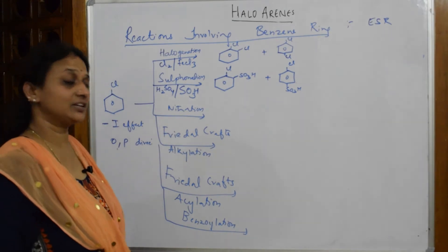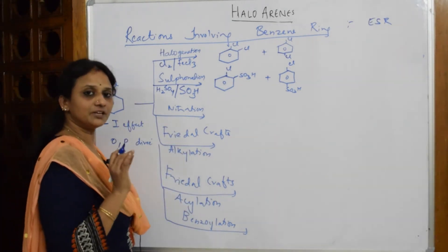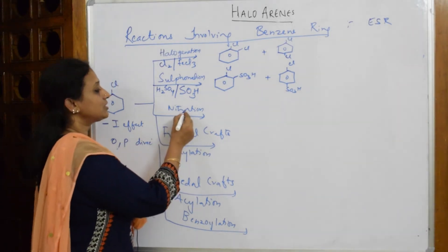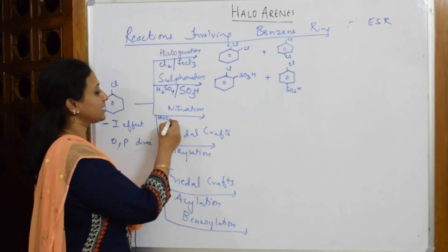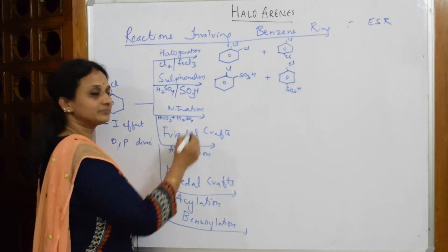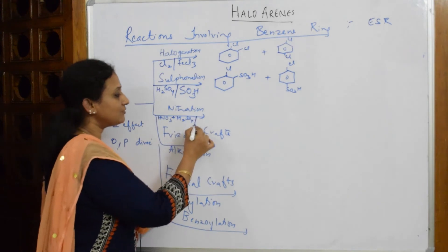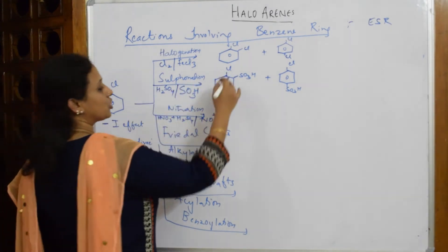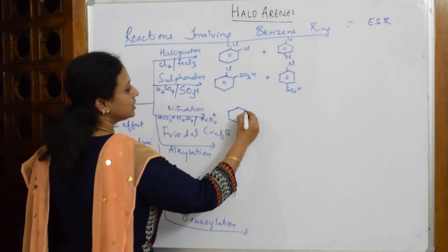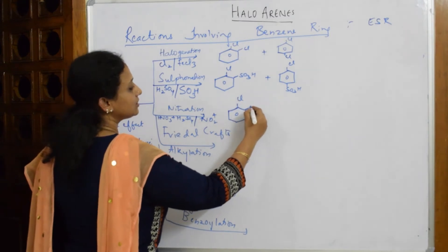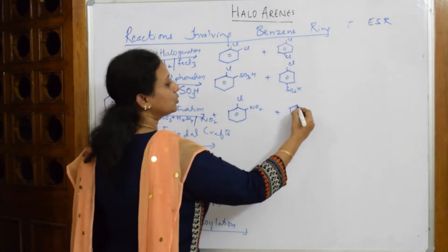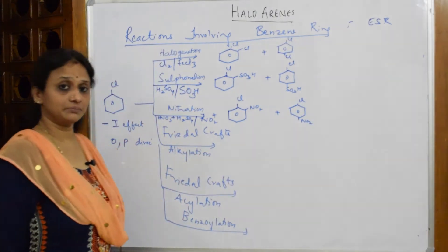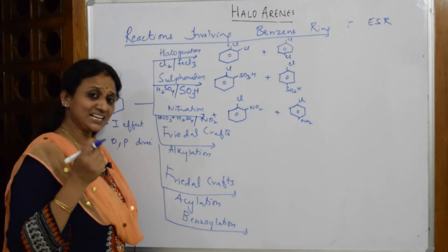Now I'm going to come to the nitration reaction. Nitration occurs in the presence of nitrating mixture, which is a combination of nitric acid plus sulfuric acid. The electrophile which is going to supply is NO2+. Which position? Same ortho and para. So in your nitration, Cl and NO2 at the ortho position and NO2 at the para position. Two products formed because due to resonance both the ortho and the para sites have excess electrons.